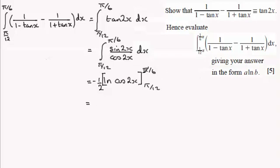So if we put π/6 in first we've got minus a half with a square bracket. We've got the natural log of the cosine of two lots of π/6, in other words π/3. And then from this we subtract the natural log of the cosine of two lots of π/12, which is the cosine of π/6.